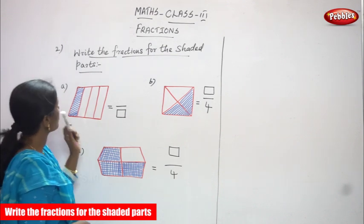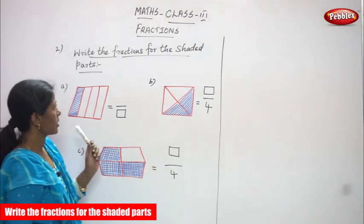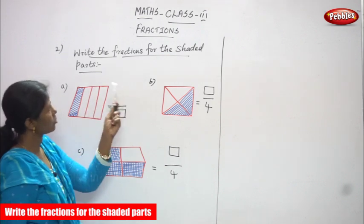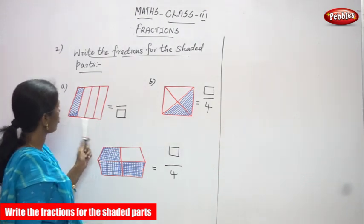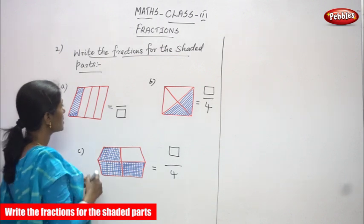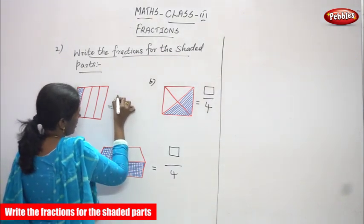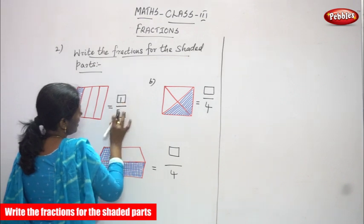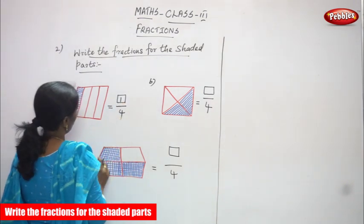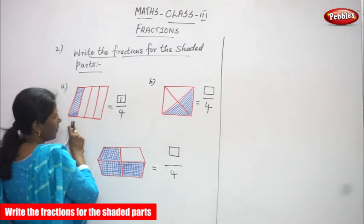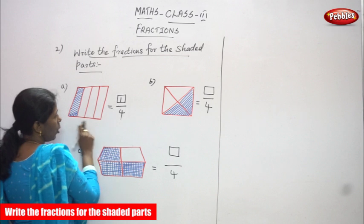We are going to see the second Roman number question: write the fraction for the shaded portion. There are one, two, three, four parts and I shaded only one part. So I put a box on the shaded part and here I rub it. How many parts? One by four — shaded part is only one part, so I've written the shaded part in the box.